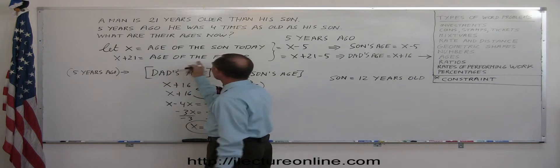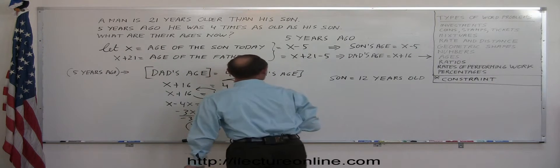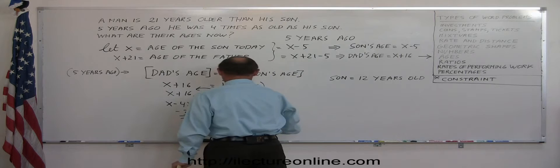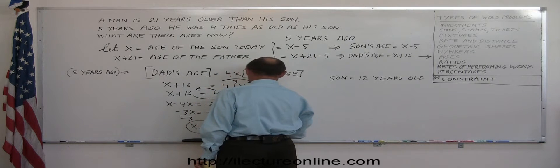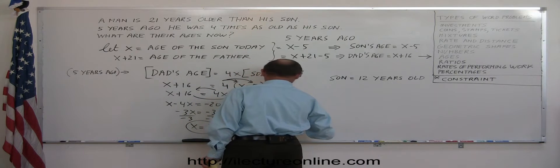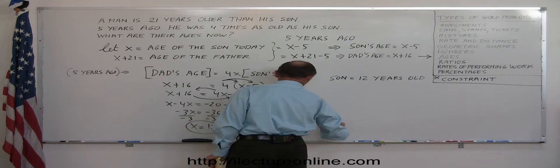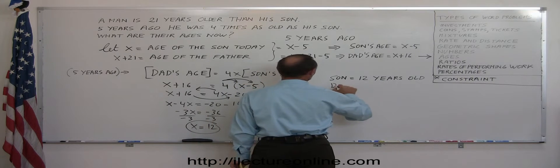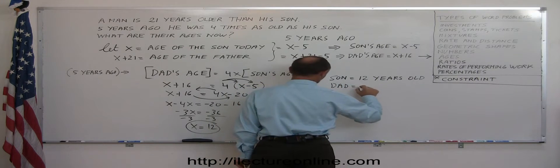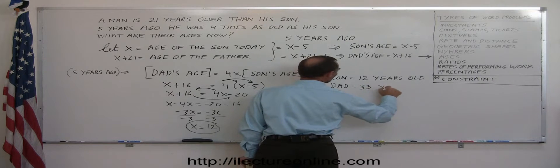And the father today, who's 21 years older than the son. So x plus 21. x plus 21 is equal to 12 plus 21, which is 33. So the dad's age is 33 years old.